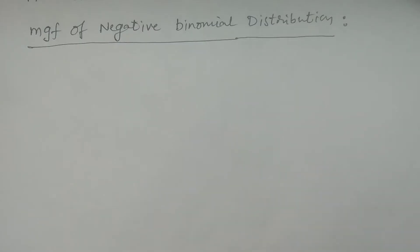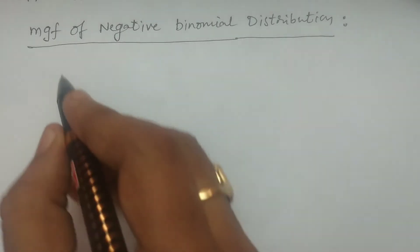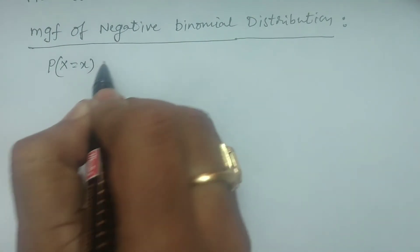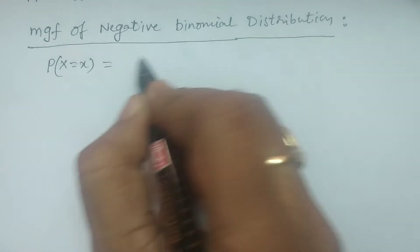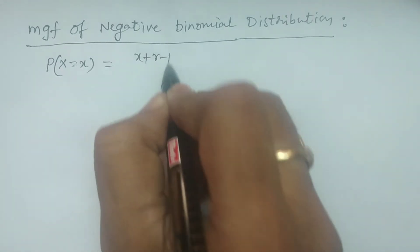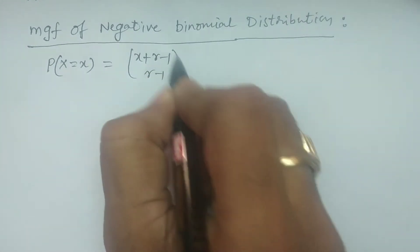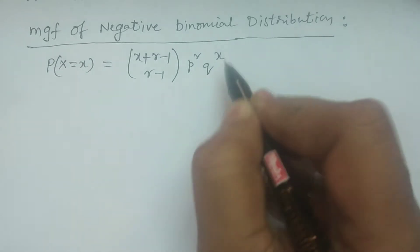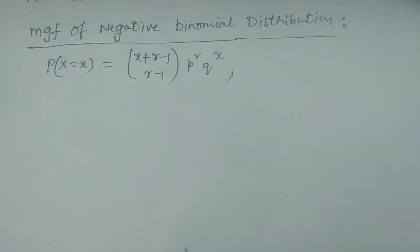First of all, I give you the probability mass function of negative binomial distribution. If we consider probability of X equal to x, it is equivalent to (x + r − 1) C (r − 1) times p to the power r times q to the power x. This is the probability mass function of the negative binomial distribution.